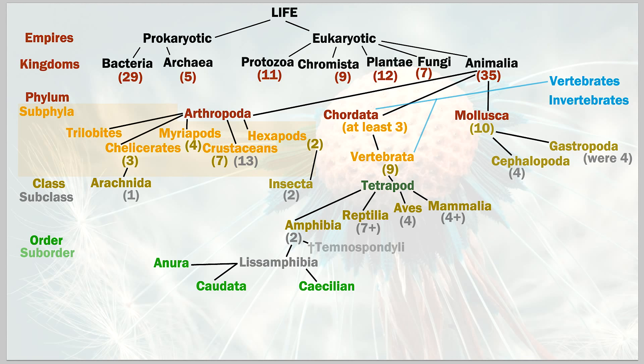Let's go into the suborders. Anura has three suborders, caudata has three suborders, and caecilians don't appear to have any. I'm going to branch down from just one suborder of anura — dropping off the others and focusing on a single specific animal.